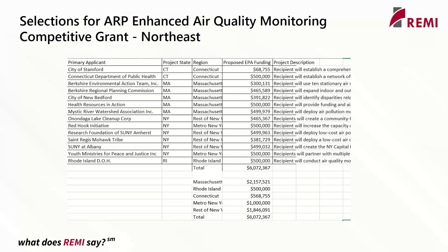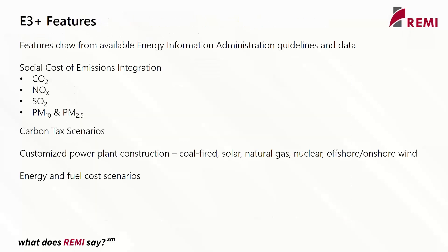From there, we have different dollar figures about the proposed amount of funding. We'll be converting these into policy variables. E3 Plus, in large part, works with the same tools as PI Plus. However, it draws a large amount of data from the Energy Information Administration. This includes the social cost of different forms of emissions: carbon dioxide, NOx, sulfur dioxide, as well as fine and coarser levels of particulate matter — PM10 and PM2.5. PM2.5 is a bit more dangerous, so that's oftentimes a target for different agencies.